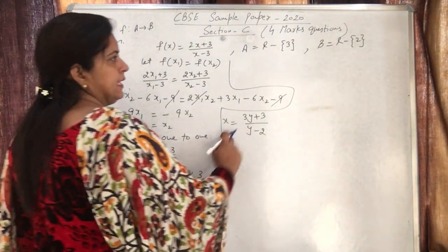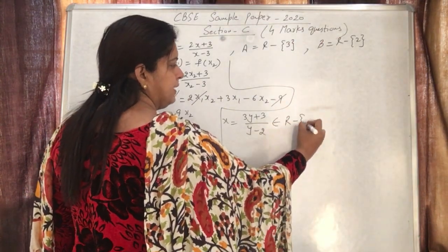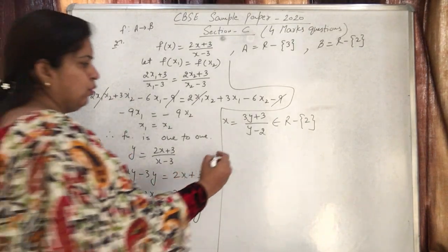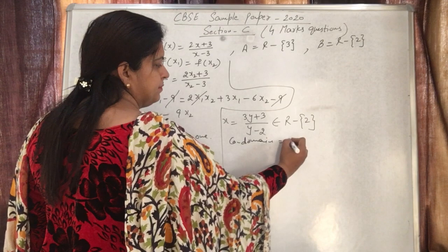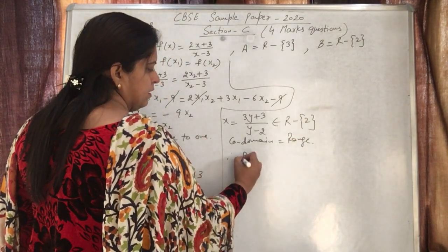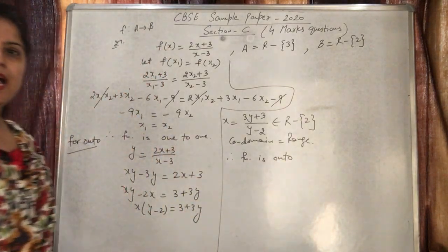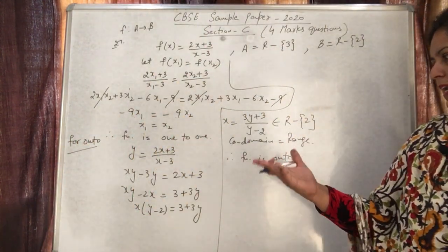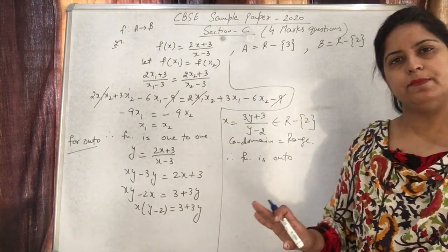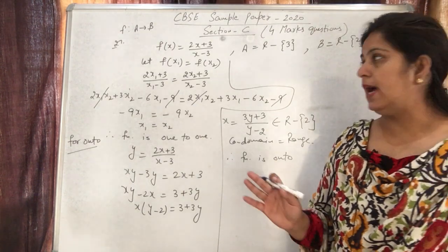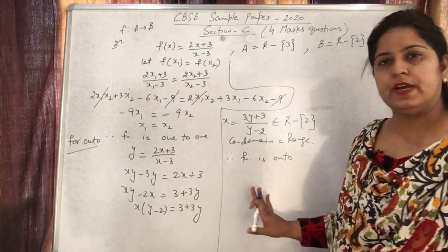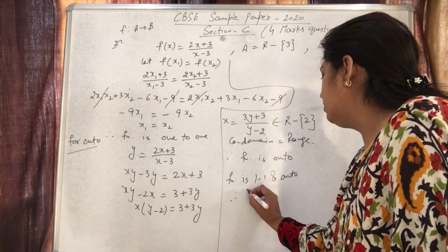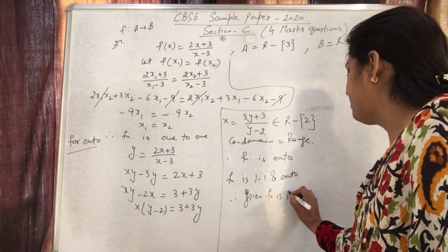So co-domain and range are equal, therefore the function is onto. This means the function is both 1-1 and onto, i.e., bijective. Since the function is 1-1 and onto, therefore the given function is invertible.